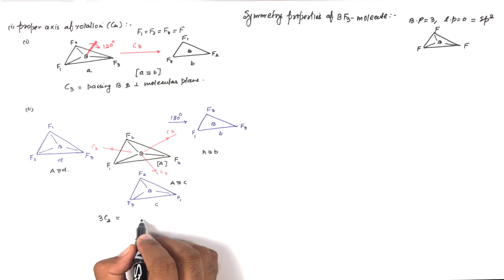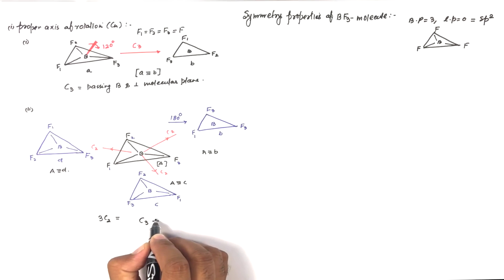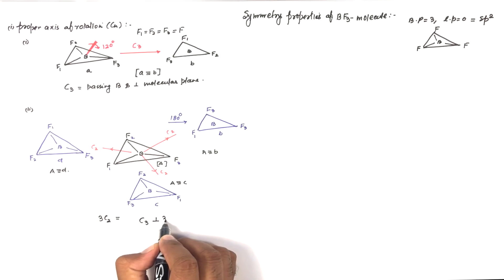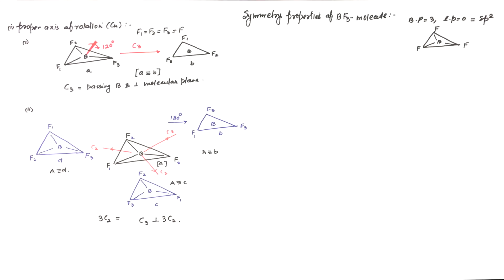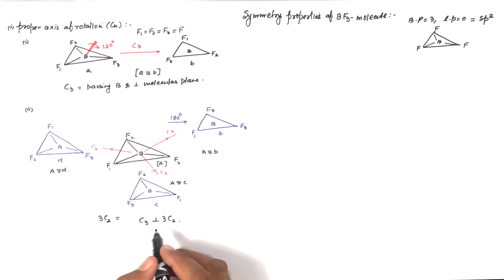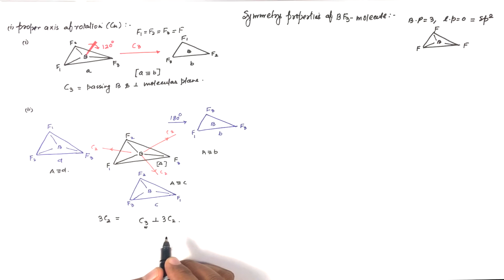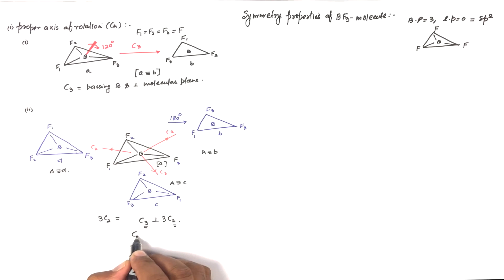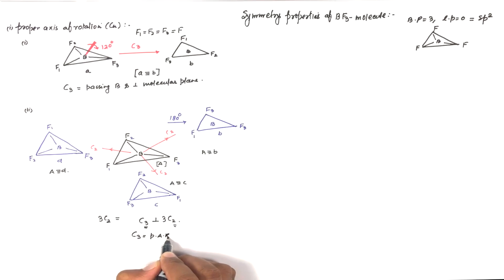We know that C3 is perpendicular to the C2 axes. Since two proper axes of rotation are present, we need to decide which is the principal axis of rotation. C3 is the higher-order axis while C2 is lower order, so C3 will be the principal axis of rotation.